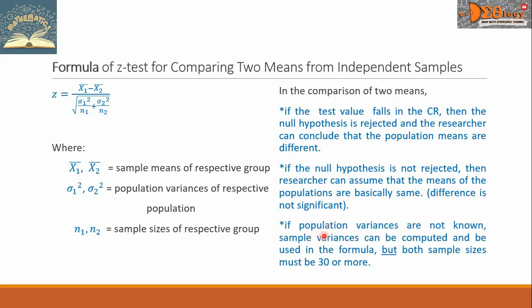If population variances are not known, sample variances can be computed and be used in the formula, but both sample sizes must be 30 or more.